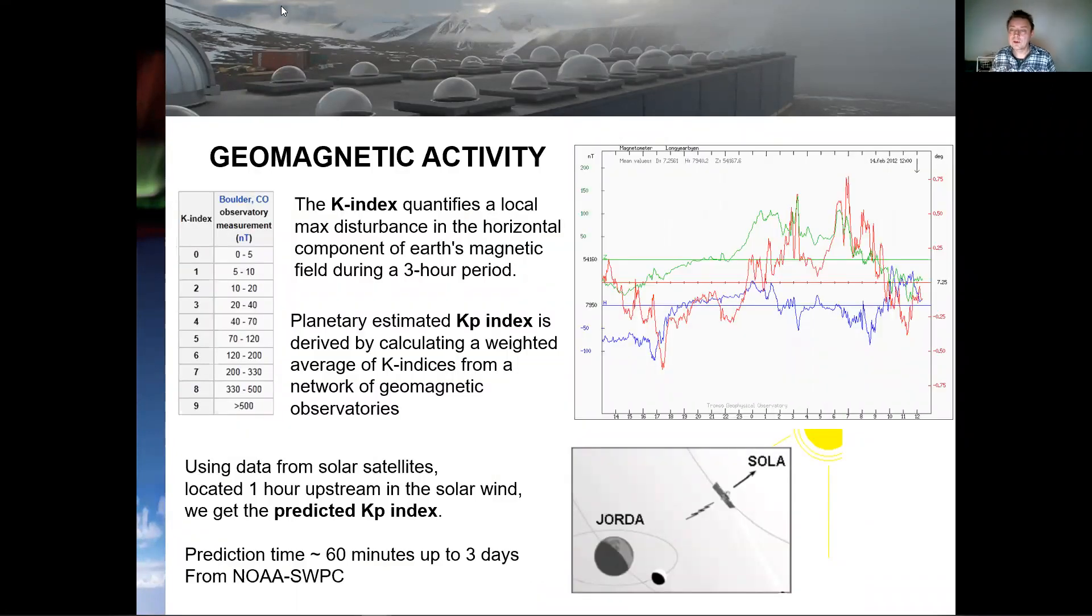Let's have a closer look at geomagnetic activity. First of all, these curves show the local variations of the geomagnetic field as measured from KHO.